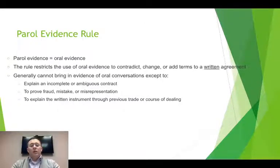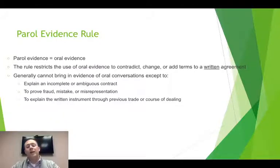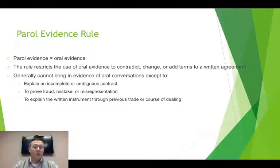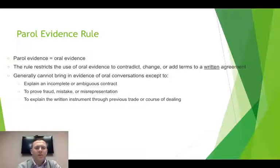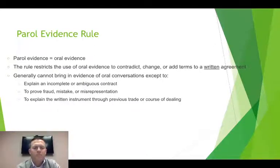This gets us to the parol evidence rule. This deals with when we can and cannot use oral evidence — conversations about the contract that aren't contained in the actual written agreement. This comes into play when you have a written agreement, whether required by the statute of frauds or simply because you chose to write it down as good practice. Once you have a written agreement, there is a specific rule about when you can use outside discussions that fall outside the four corners of the document to contradict or change what's in the writing.